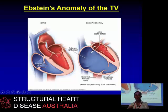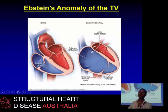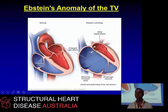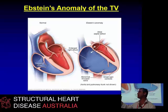Everyone's eye is drawn on echo, and when you see these patients, to the enormous right atrium. But in fact, that's of almost no consequence except for arrhythmia. What's of huge consequence is the tiny left ventricle. We published many years ago that that left ventricle actually has a lot of fibrosis in it — so it's not just that it's squashed by the right ventricle, it's actually fibrosed as well.